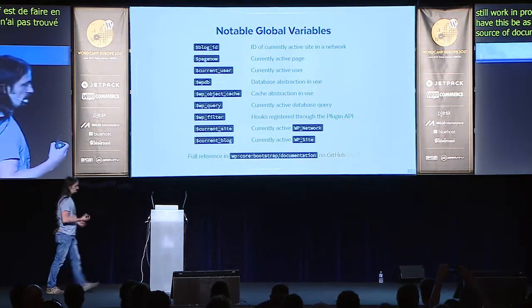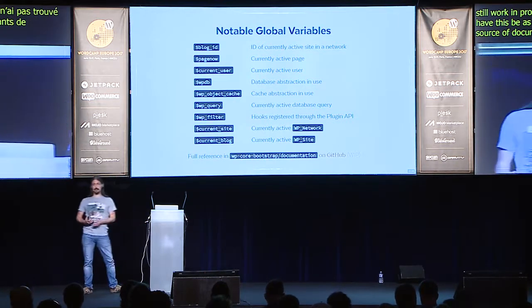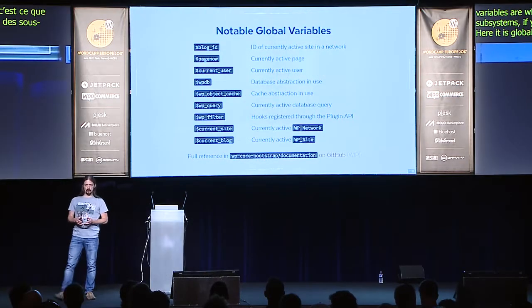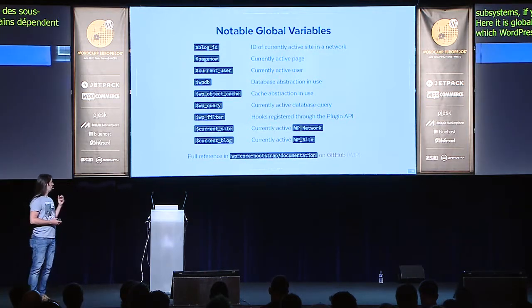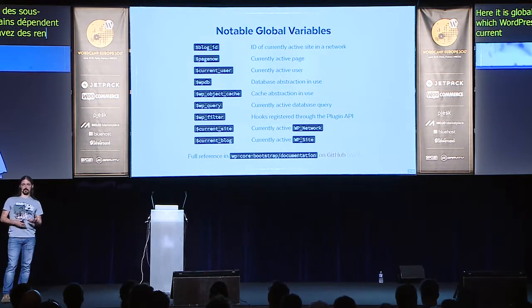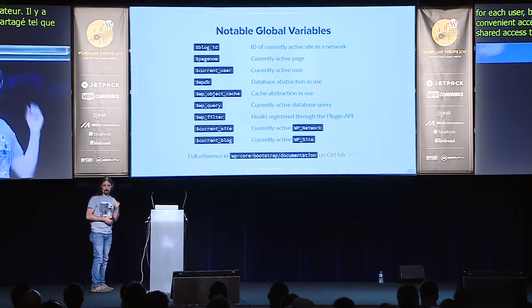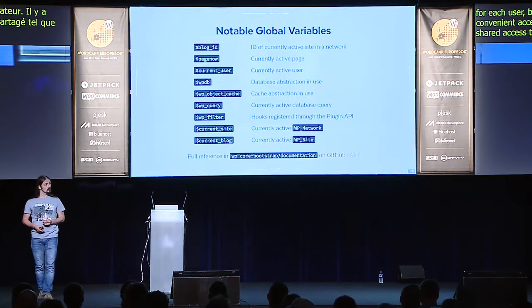Then, as the next family of elements that WordPress uses, we have global variables. Global variables are what WordPress generally uses to share information across subsystems. If you would work with objects, these would be the shared objects. Some of these heavily depend on the context in which WordPress is currently in — for example, you have information about the current user, which only makes sense if the user is logged in and which changes for each user. But there's also information that just tries to give you convenient access to some shared object, like the wpdb global that gives you shared access to the database abstraction layer. Again, this is a huge list, and I'm also trying to document all of these out, which is also a work in progress. You can find this in the same GitHub repository.